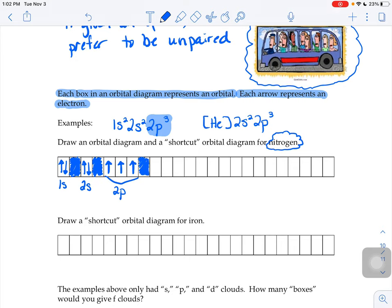So we did the orbital diagram for nitrogen. How do you do the shortcut orbital diagram for nitrogen?